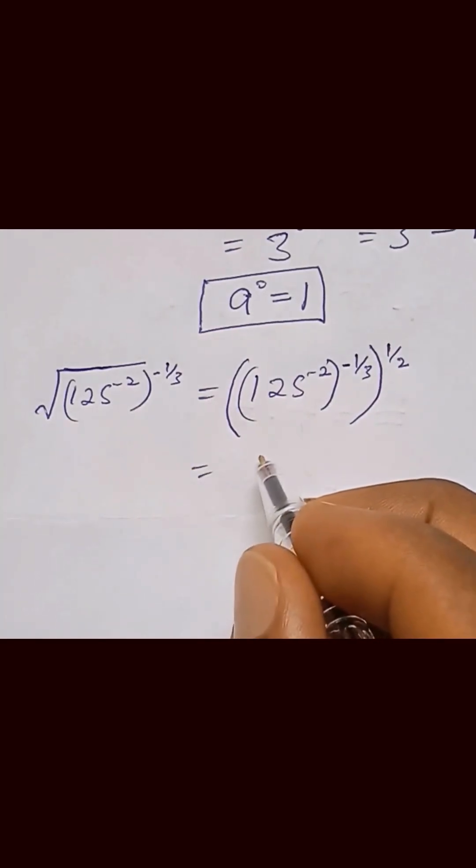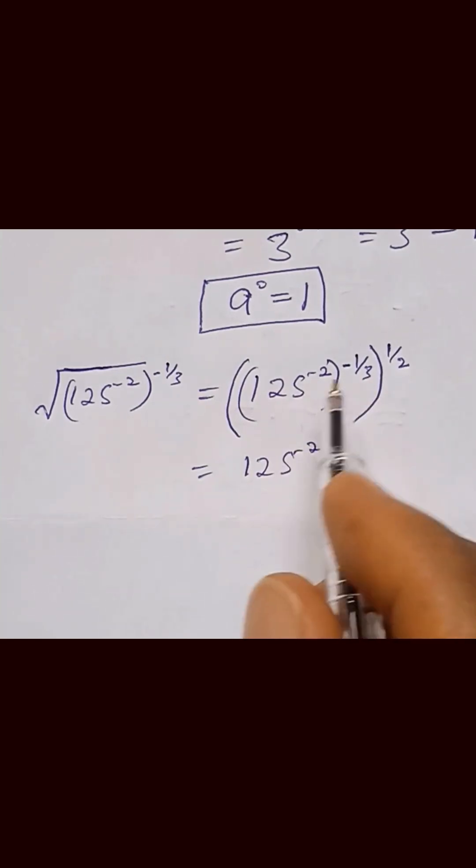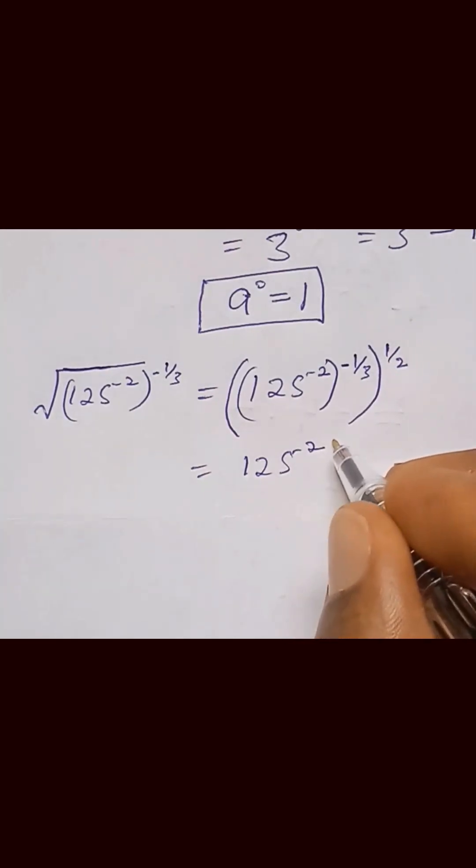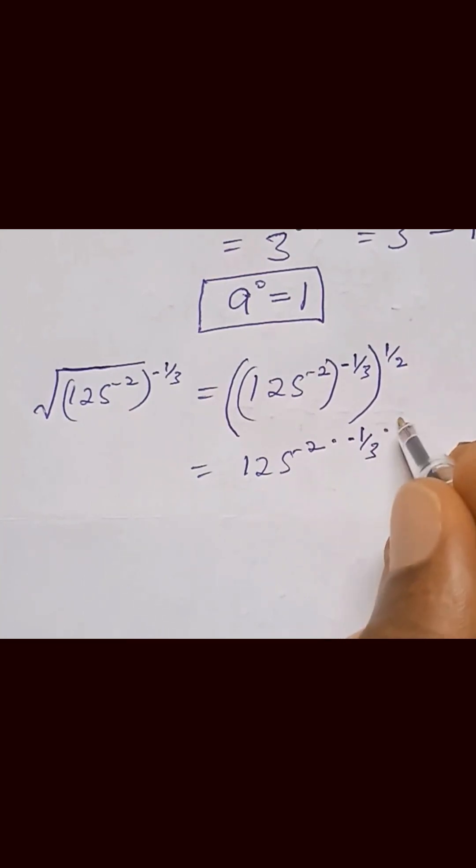That can be written as 125 raised to the power 2. We can combine all these together, so we multiply 2 by minus 1 over 3, then multiply by 1 over 2.